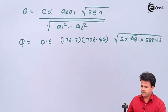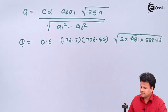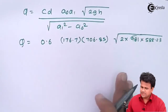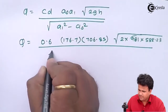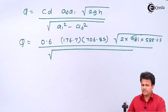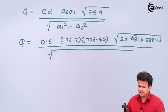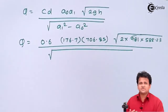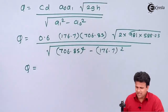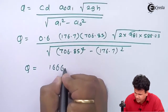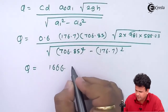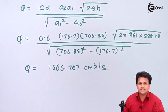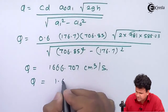We convert to centimeters because solving in meters would involve terms with 10⁻⁴, making the calculation cumbersome. Students comfortable with meters can skip the conversion. After substituting all values, Q = 1666.707 cm³/s, or Q = 1.66 liters per second.